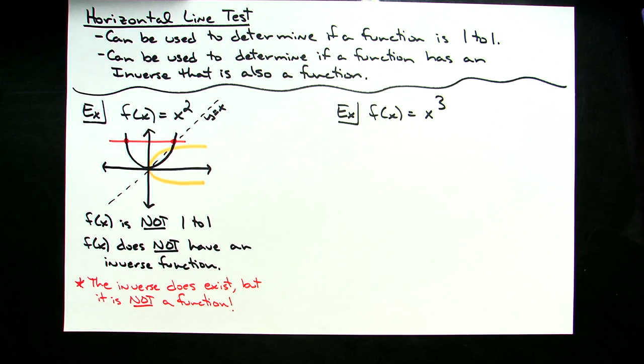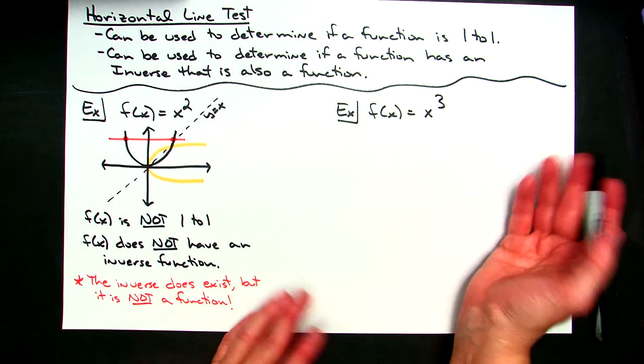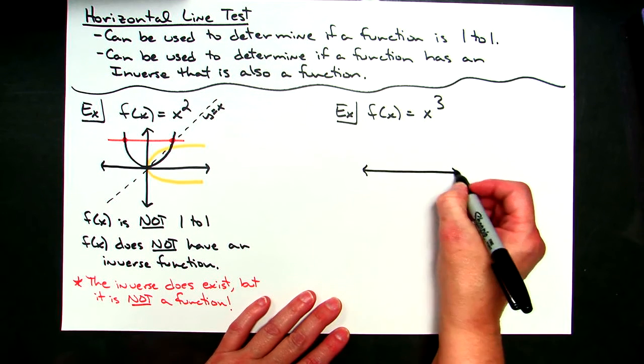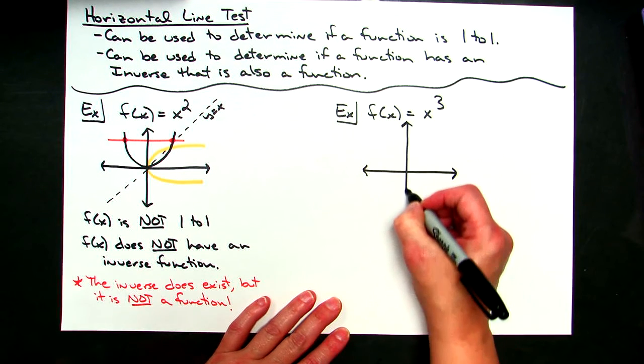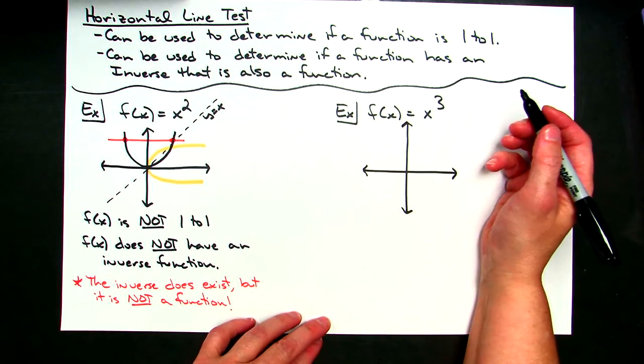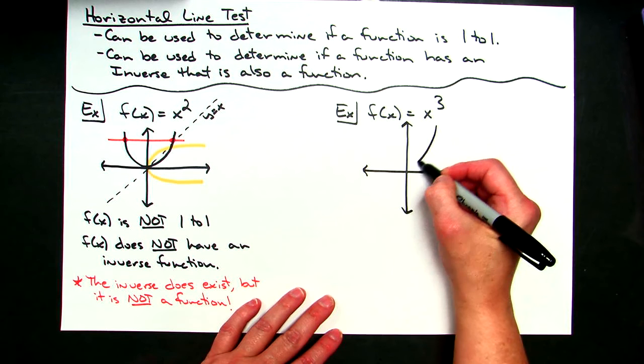Okay, to clarify the difference there. Now, taking a look at our second example here, we've got f of x equals x to the third. Again, I picked a relatively easy one that we could sketch just to get an idea of how this is going to work. So we know our x to the third, it's not shifted away from the origin. There's no flipping or anything going on, so just a really rough sketch of x to the third is going to look something like that.